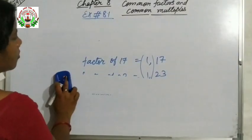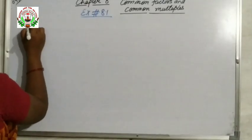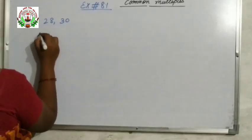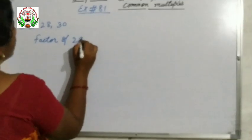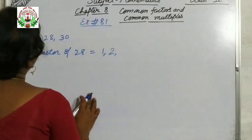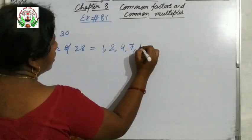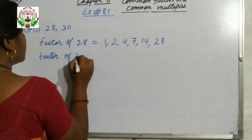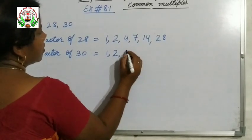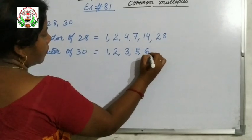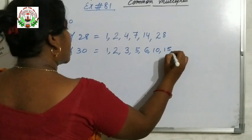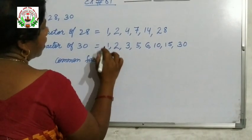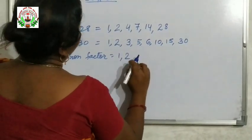Now we will start solving question number 2: which are co-prime numbers? In question number 1, it is given 28 and 30. First we will write the factors of 28: 1, it is an even number so it is divisible by 2, then 4 times 7 is 28, 7 times 4 is 28, 14 times 2 is 28, and 28. Next, factors of 30: 1, it is an even number so it is divisible by 2, then 3 times 10 is 30, 5 times 6 is 30, 6 times 5 is 30, 10 times 3 is 30, 15 times 2 is 30, and 30. The common factors are 1 and 2.